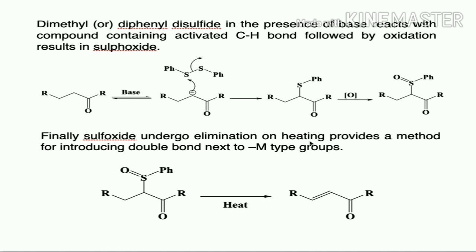The sulfoxide derivative finally undergoes elimination on heating to give a double bond. This method is used for the introduction of a double bond adjacent to an electron-withdrawing group like a carbonyl. To prepare an α,β-unsaturated carbonyl compound, treatment of an active methylene group with base, followed by reaction with a disulfide compound, oxidation, and elimination, introduces the α,β-unsaturated double bond using organosulfur compounds such as diphenyl or dimethyl disulfide.